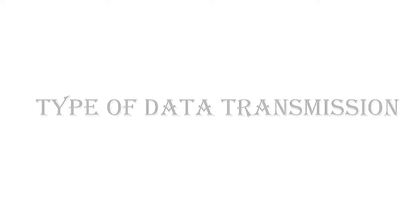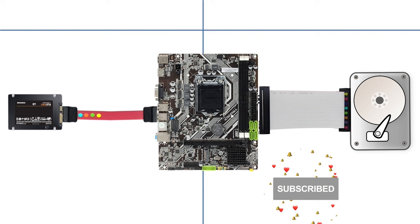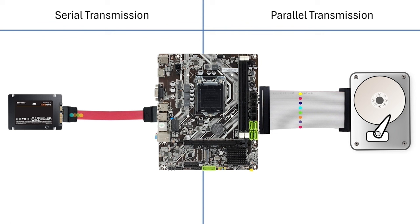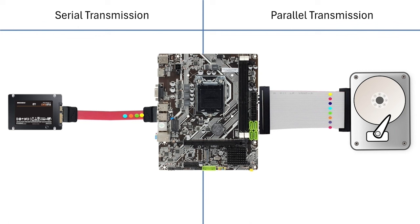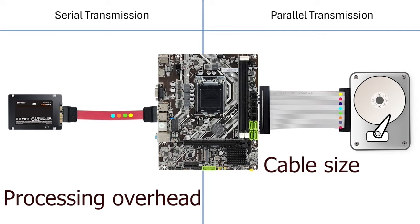A computer can use two methods to exchange data between storage devices and the motherboard: serial transmission and parallel transmission. In serial transmission, data is transferred bit by bit. In parallel transmission, multiple bits are transmitted simultaneously — for example, the IDE cable transfers 8 bits at a time. Parallel transmission is faster than serial transmission; however, manufacturers prefer serial transmission due to processing overhead, cable size, and crosstalk.